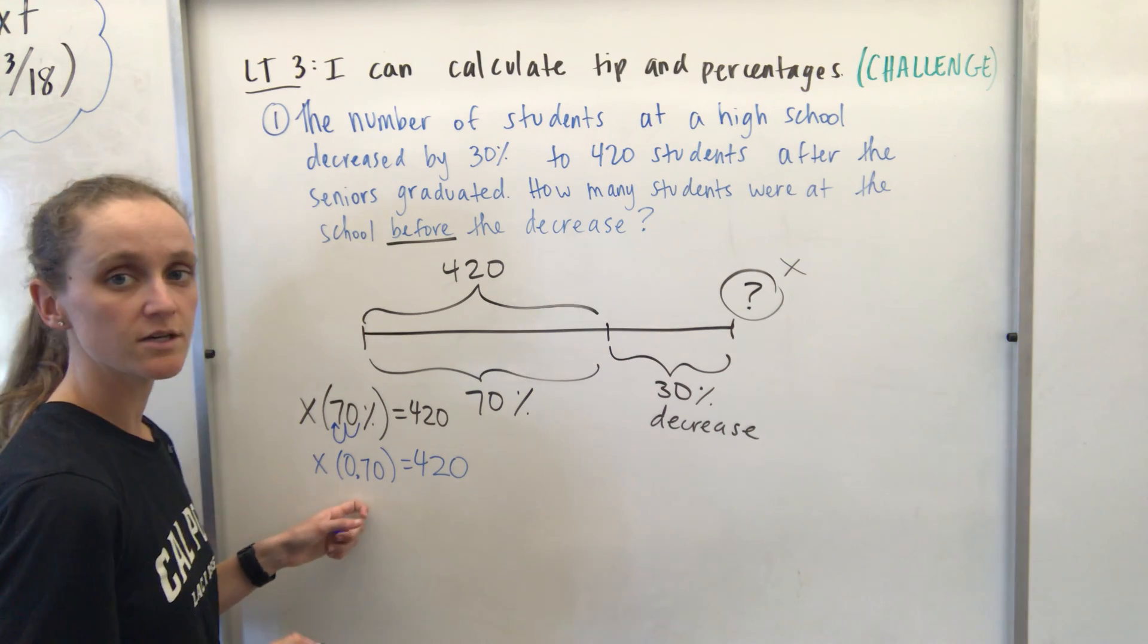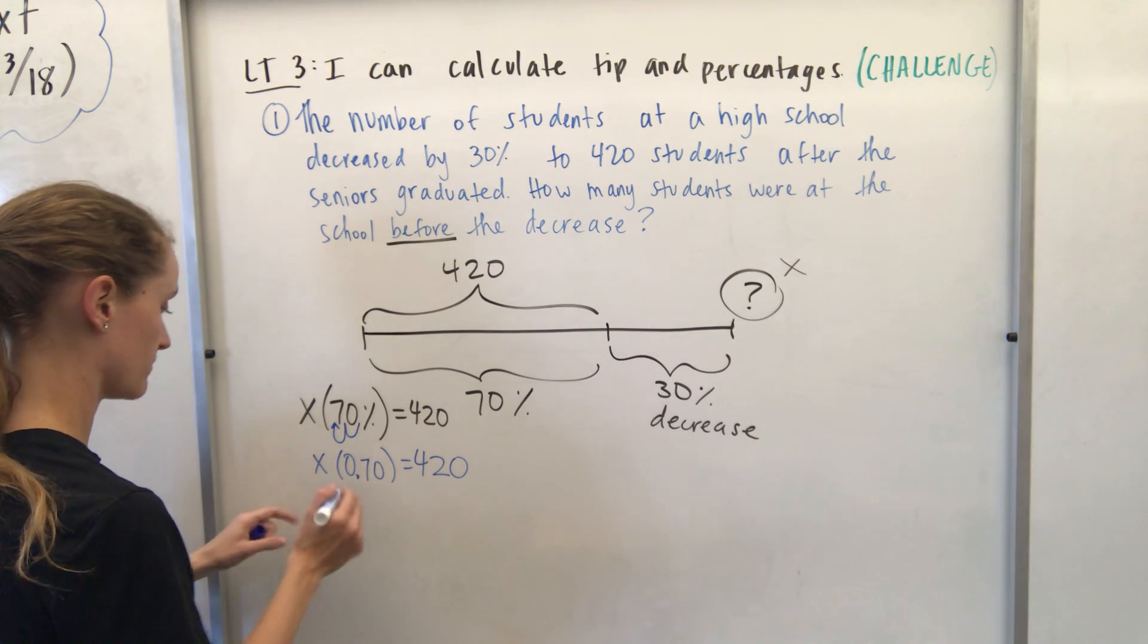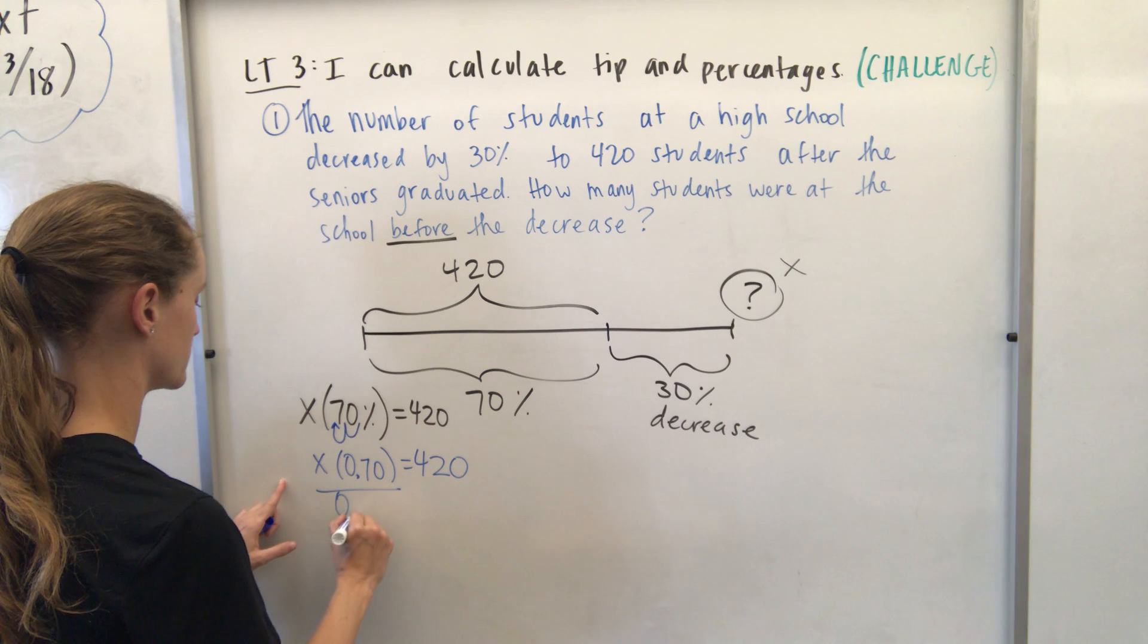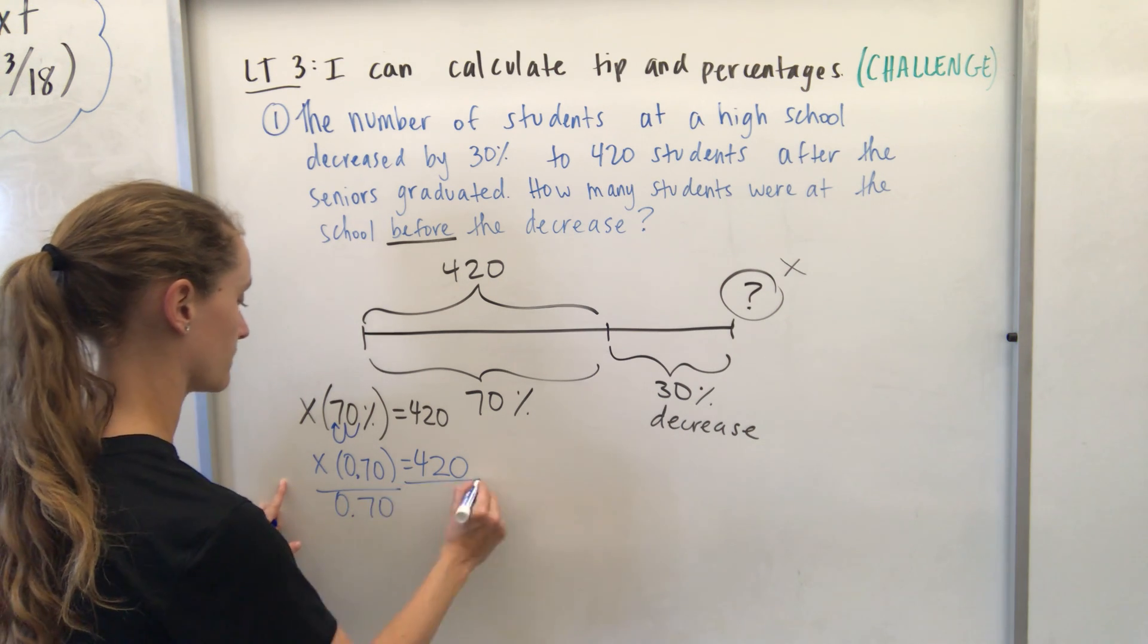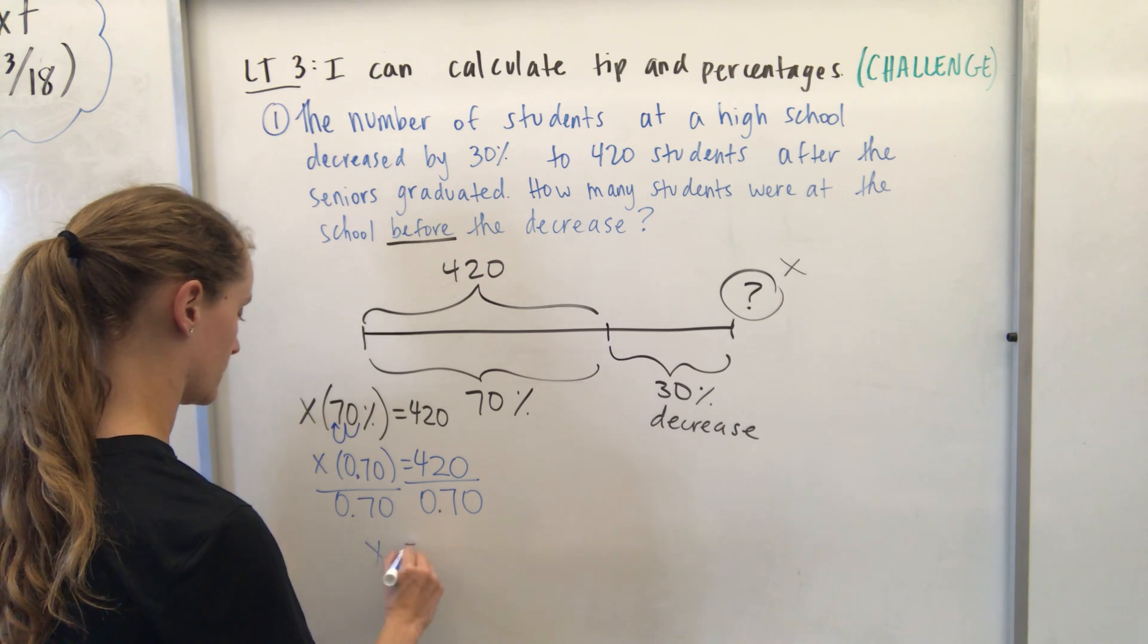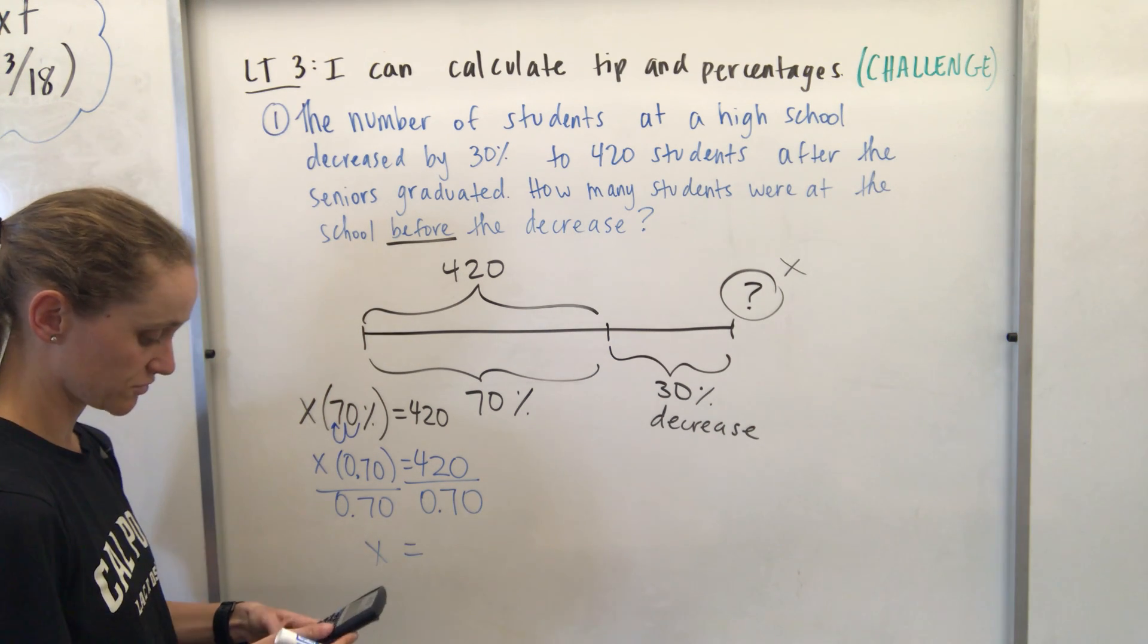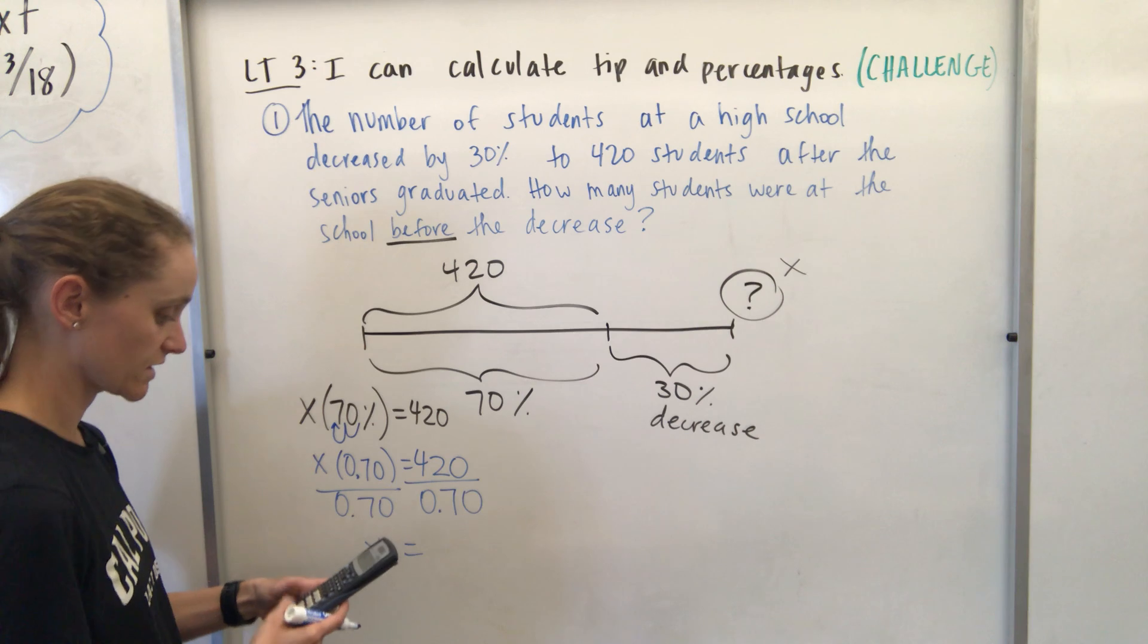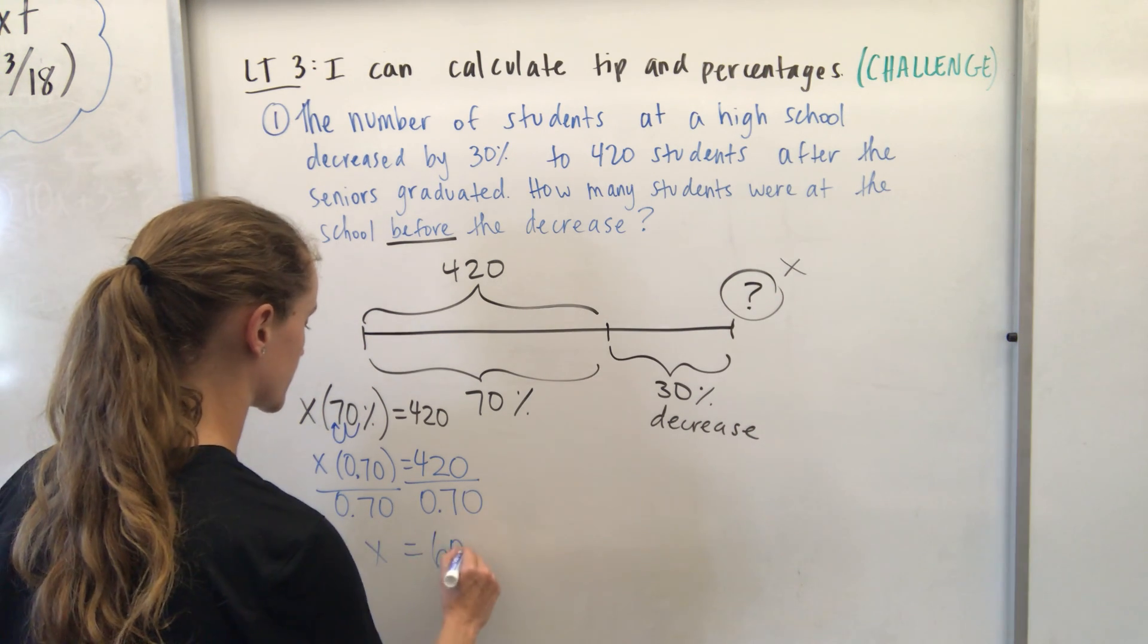And I know that here, because I'm multiplying by 0.70, I need to divide by it. And when I do 420 divided by 0.7, I'm going to get 600 students.